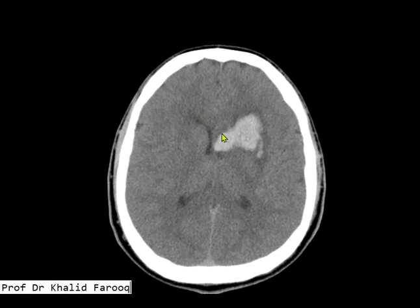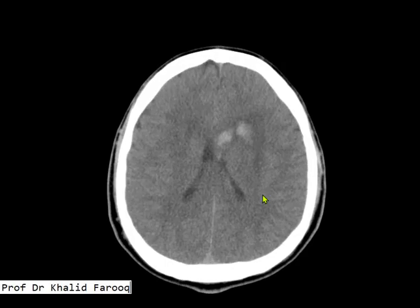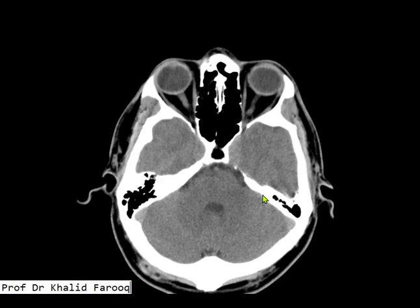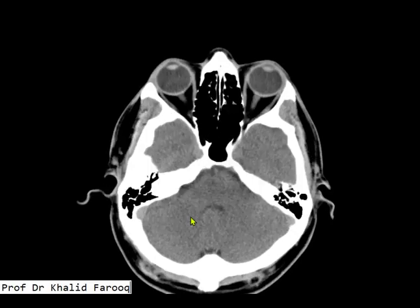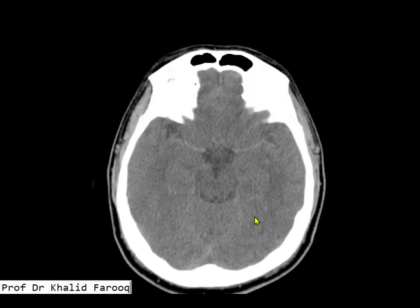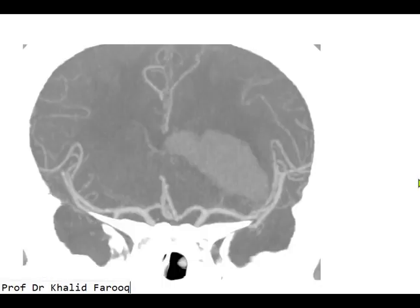while we are unable to see the left frontal horn because of mass effect on it. The remaining brain parenchyma including the brainstem, fourth ventricle, CP angles, and cerebellum is unremarkable. Let's look at the CT angiography.